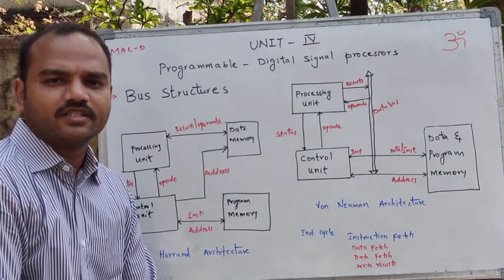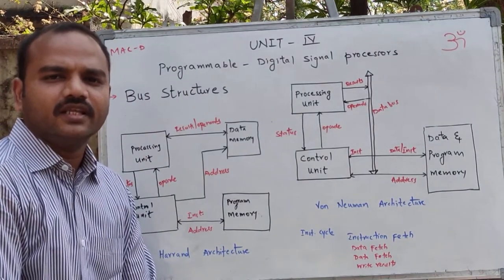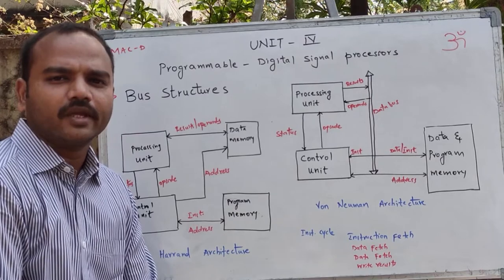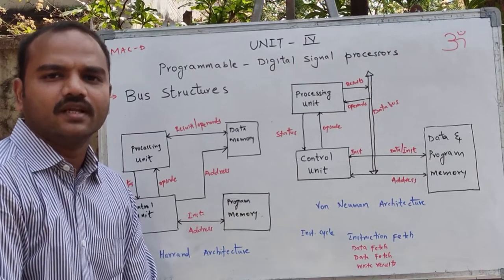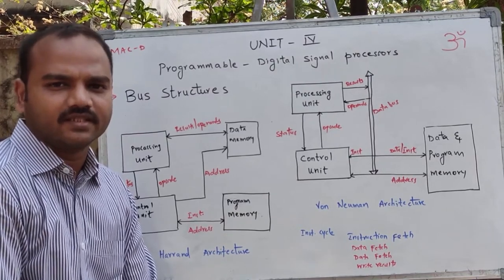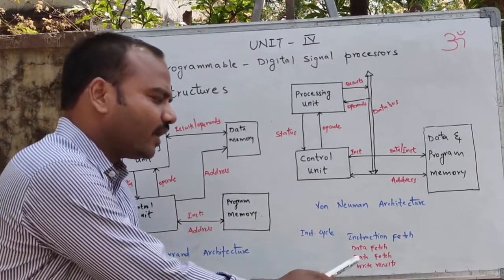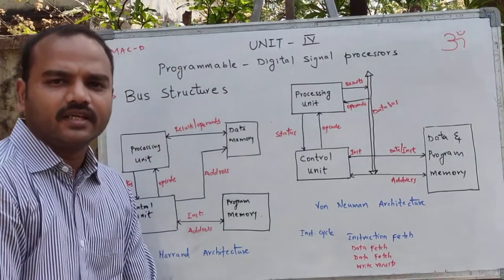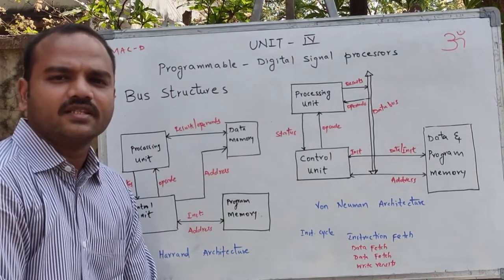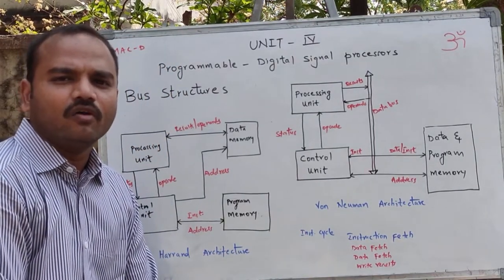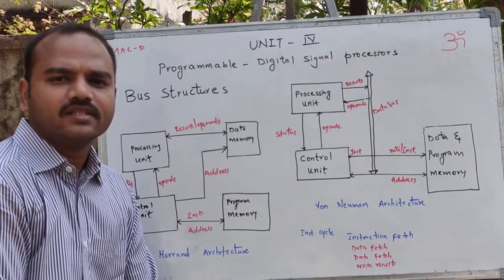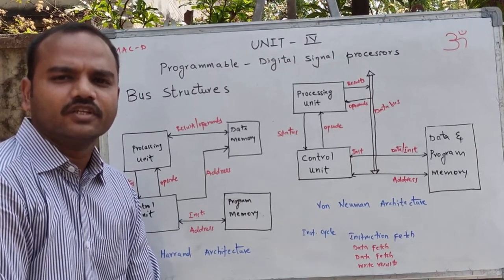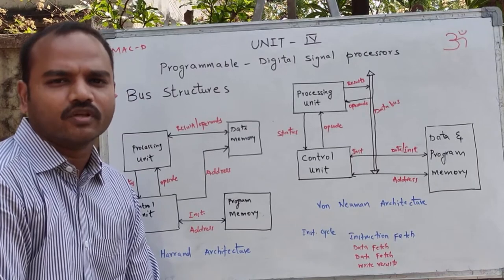If this MACD instruction is executed on a conventional microprocessor like the 8086, it requires four clock periods. That is, one instruction cycle of MACD requires four clock pulses on a conventional microprocessor.